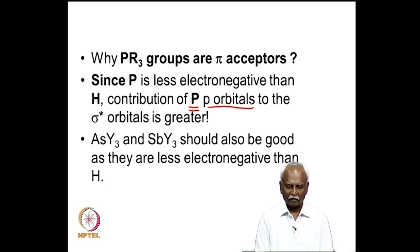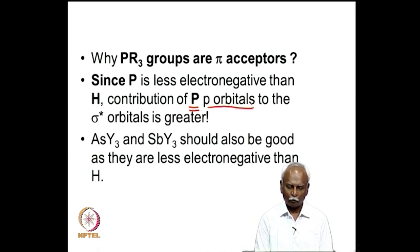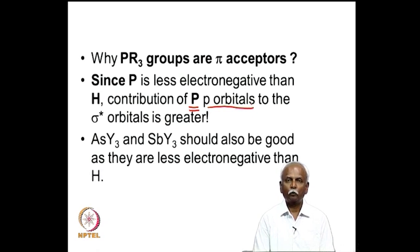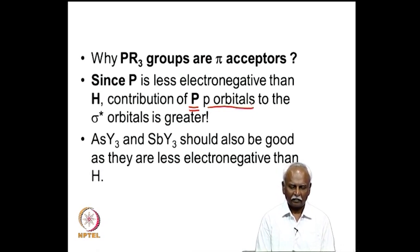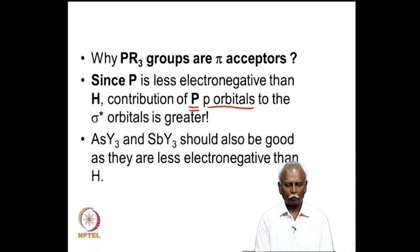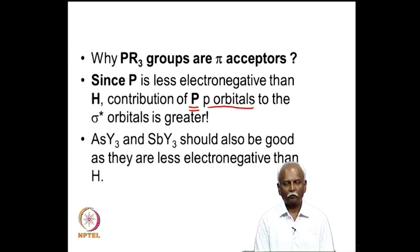Arsenic(III) and antimony(III) groups should also be good pi acceptors, as arsenic and antimony are less electronegative than the R groups, giving them a good ability to accept electron density into the sigma-star orbitals.